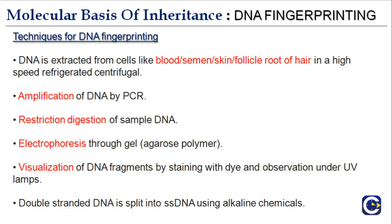For the technique of DNA fingerprinting, DNA is first extracted from cells — such as blood, semen, skin, or the follicular root of hair — in a high-speed refrigerated centrifuge. In forensic cases, experts collect these materials from crime scenes since all of them contain DNA.